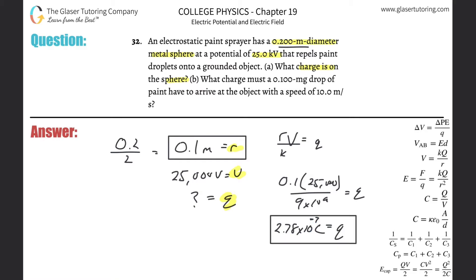What charge must a 0.1 milligram drop of paint have to arrive at the object with the speed of this. All right. So basically I know this is connected through energy somehow. So to have for this mass, to have this velocity, it has some type of energy, right? It has a kinetic energy, one half MV squared. So why don't we solve that?